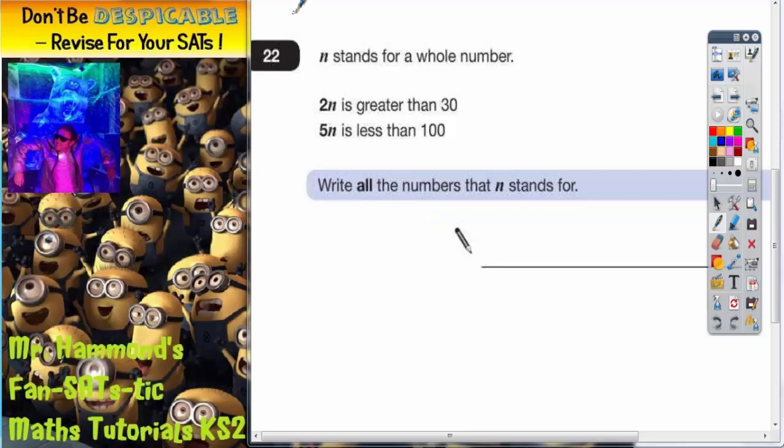Question 22 is the last question on the paper, so you'd expect it to be one of the harder ones. It says N stands for a whole number. N is just a mystery number.